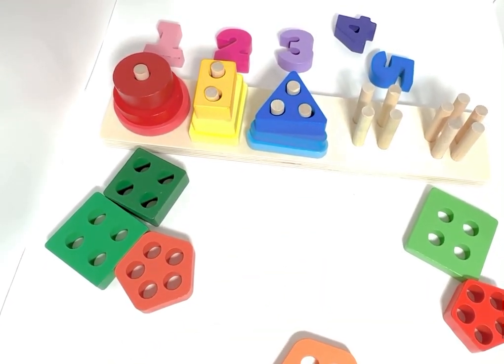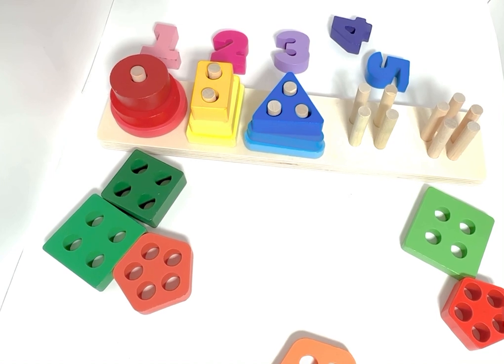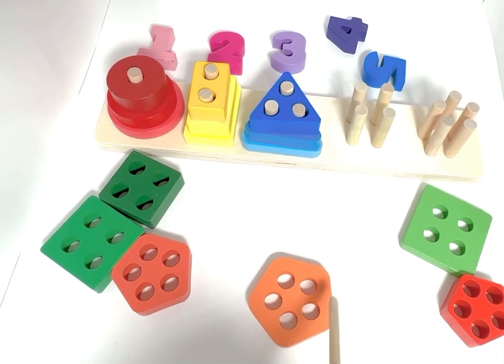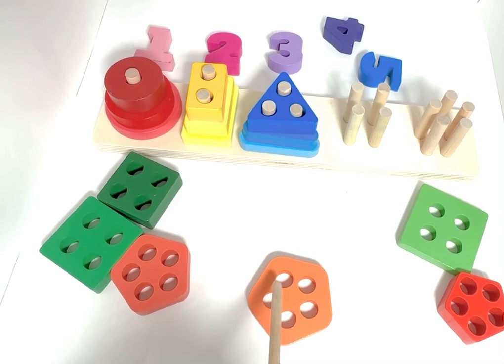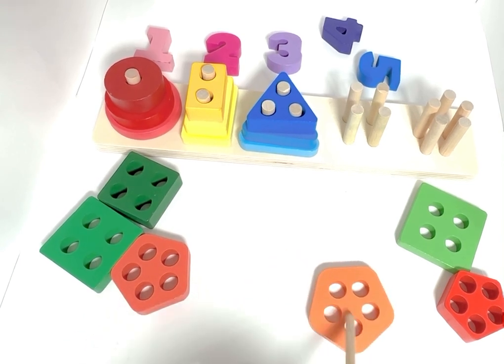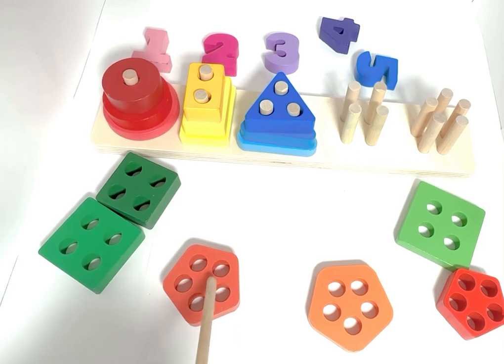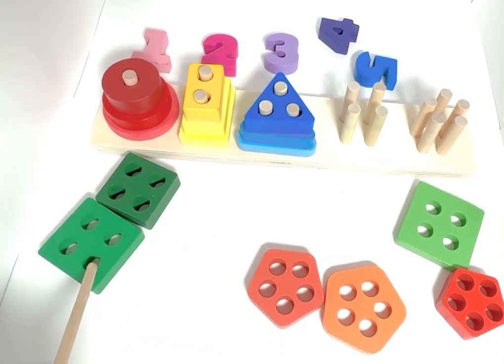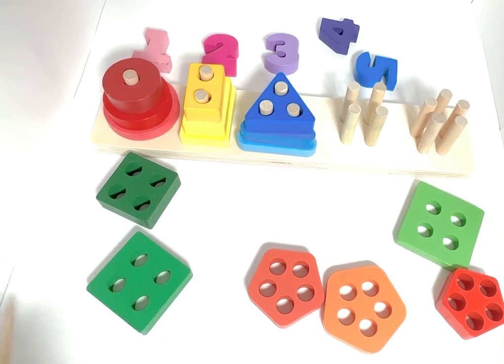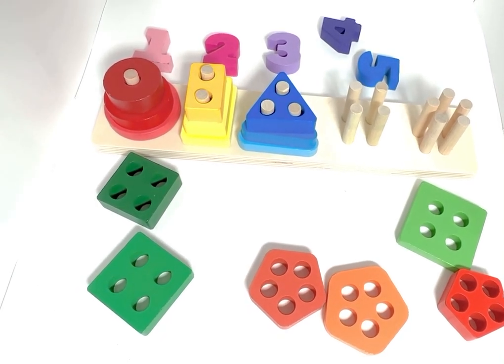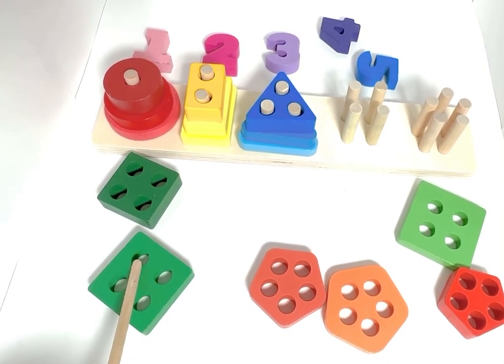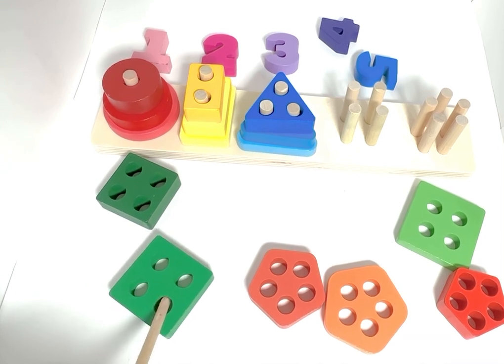Which shape over here has four holes? Let's count this one. One, two, three, four, five. Nope. One, two, three, four, five. Nope. One, two, three, four. Okay, so it is a green square. A green square has four pegs.